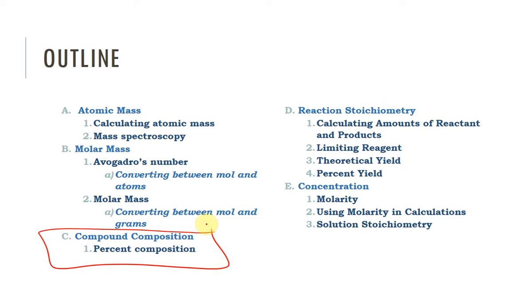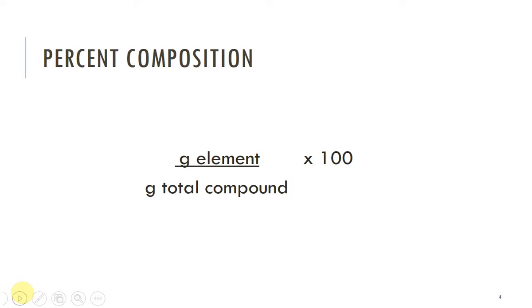Here we're going to be looking at molar mass and the percent composition of a molecule. We're not going to go much further than that. Percent composition takes the grams from an element in a compound, divides it by the total molar mass of that compound, and you multiply by 100.